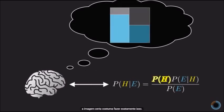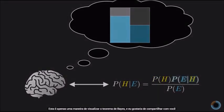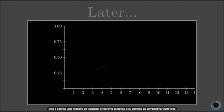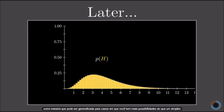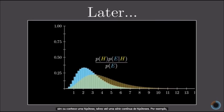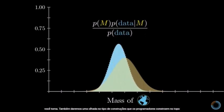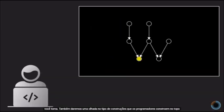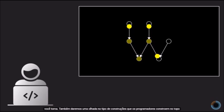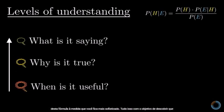What's more interesting is how we can reprogram our intuition to authentically reflect the implications of math, and bringing to mind the right image can often do just that. Coming up, I'd like to share a different way to visualize Bayes' theorem that's a little easier to generalize to cases where instead of a yes-no hypothesis, you have a continuous range of hypotheses — for example, updating your beliefs about the mass of the earth based on new measurements. We'll also take a glimpse at some of the kinds of constructs programmers build on top of this formula as you get more sophisticated. All of this will be in the next video.